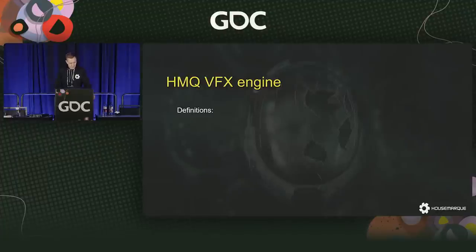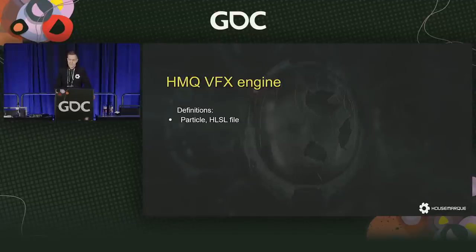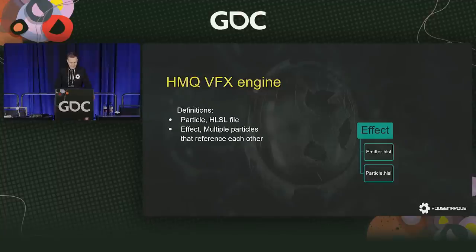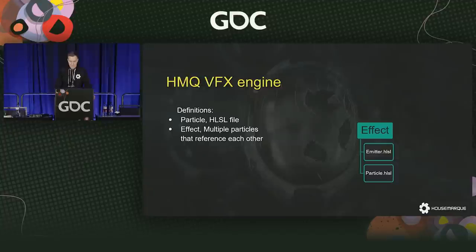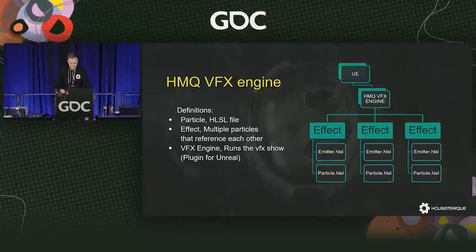Let's go through some definitions. In our system, when I say a particle, that's a single particle — it's just a text file with some HLSL code in it. An effect, on the other hand, is a system of particles that reference each other; for example, an emitter that emits other particles. The engine itself does not distinguish between particles and emitters — any particle can be an emitter or not. The VFX engine runs the HLSL, keeps particles alive, discards dead particles, and does other useful things.